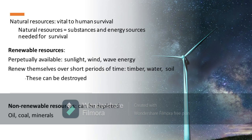Natural resources are vital to human survival. Natural resources are substances and energy sources needed for survival. We have two categories: the renewable and the non-renewable. Renewable resources are perpetually available, like sunlight, wind, and wave energy. They also renew themselves over short periods of time, like timber, water, and soil. Take note that renewable resources are resources that can be destroyed. Non-renewable resources are resources that can be depleted easily — for instance, oil, coal, and minerals.